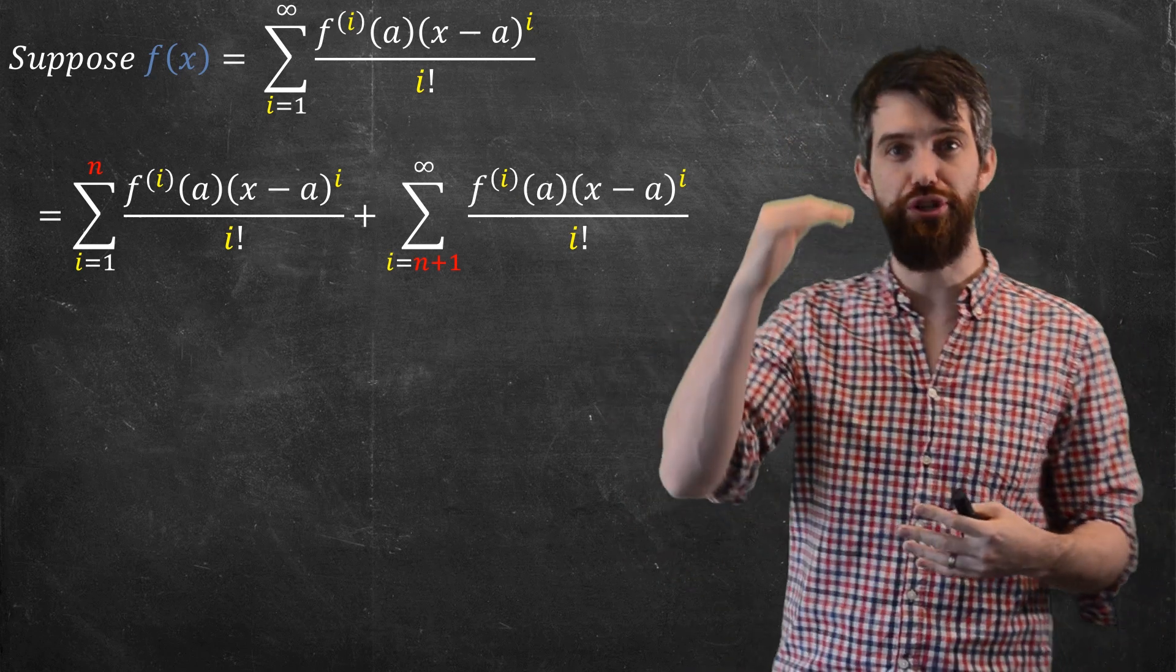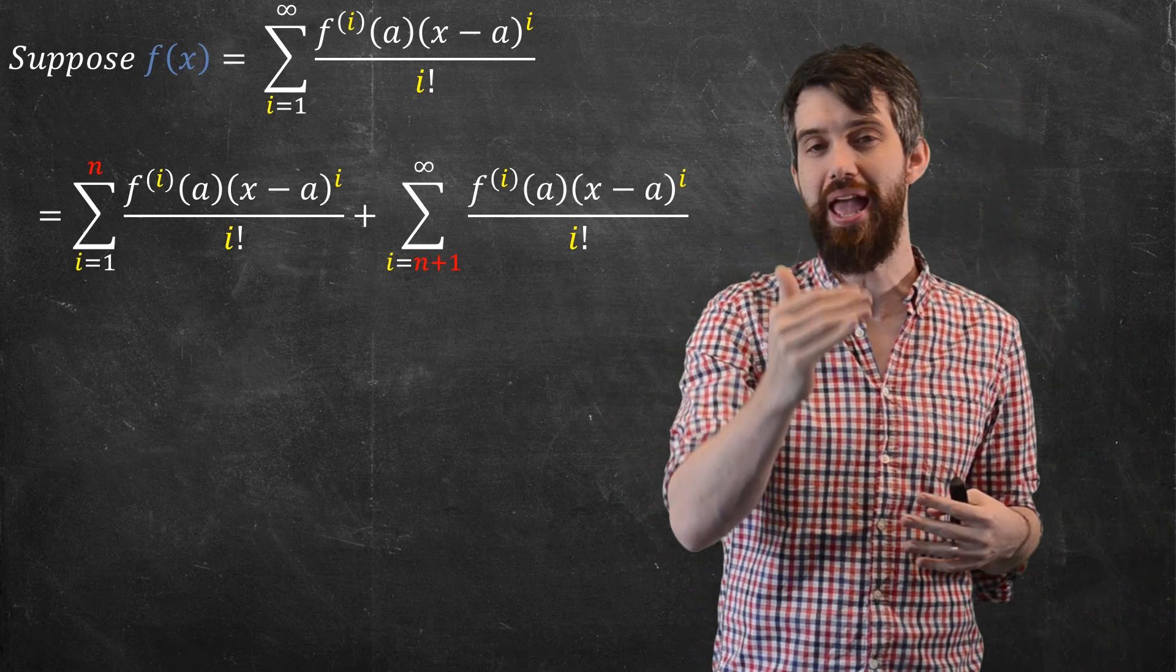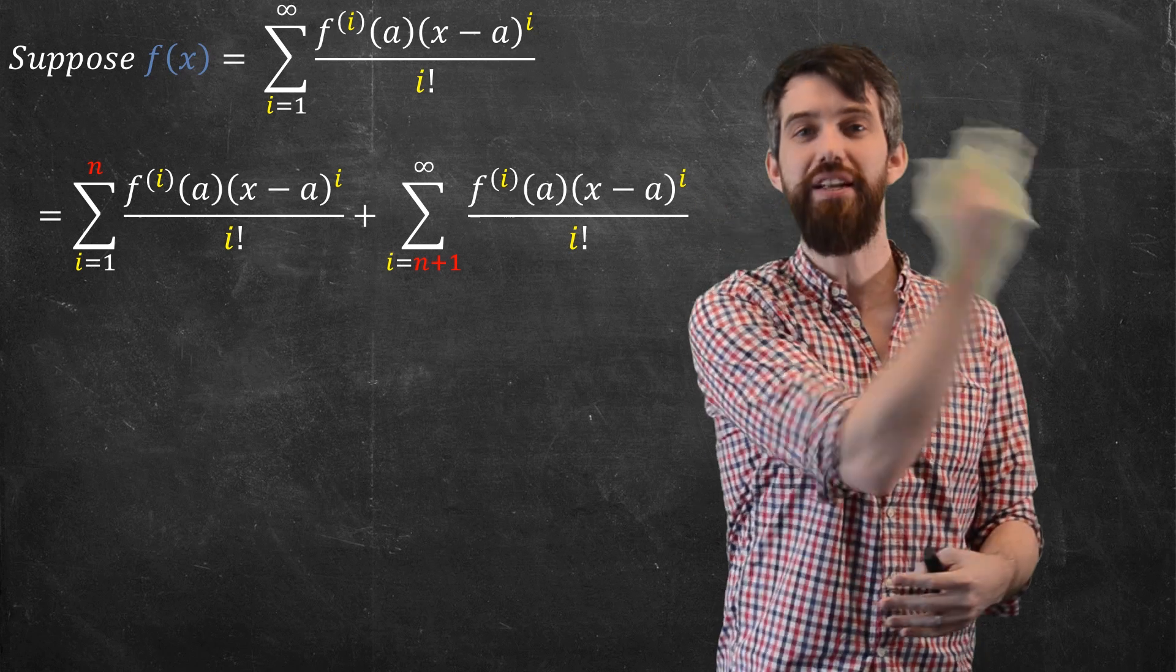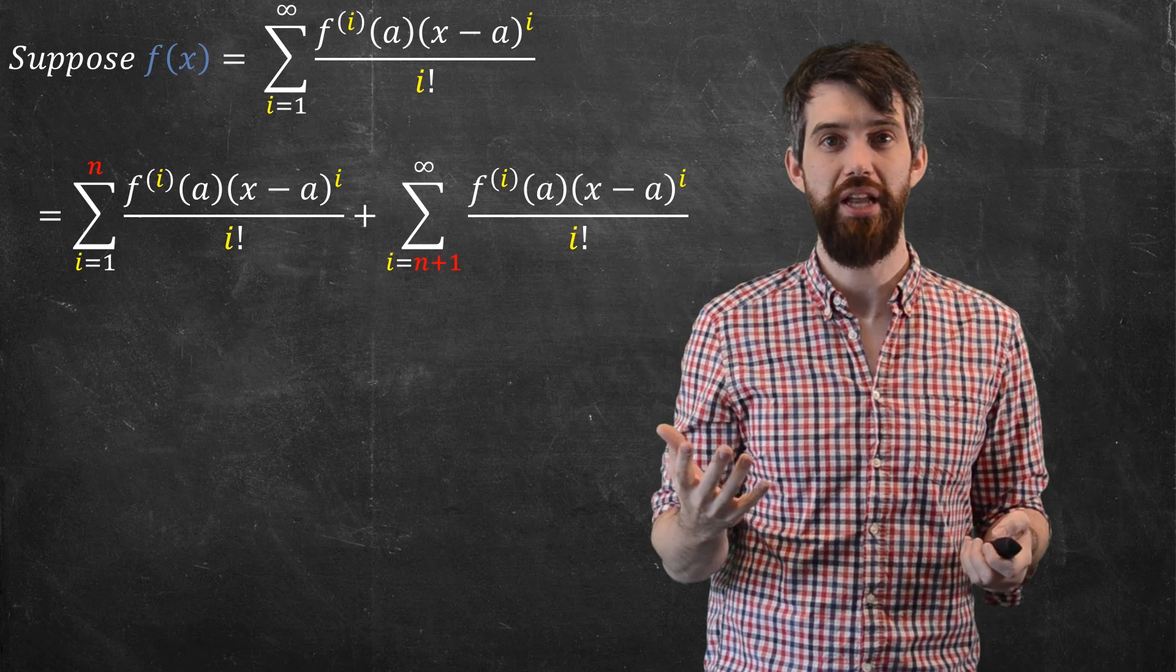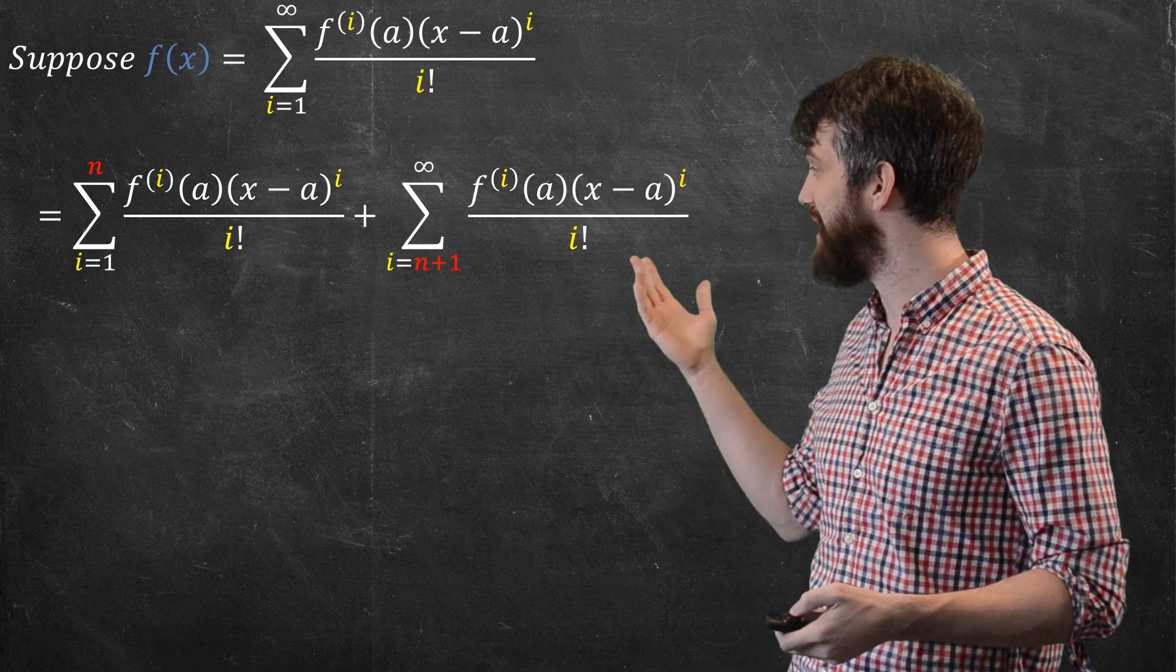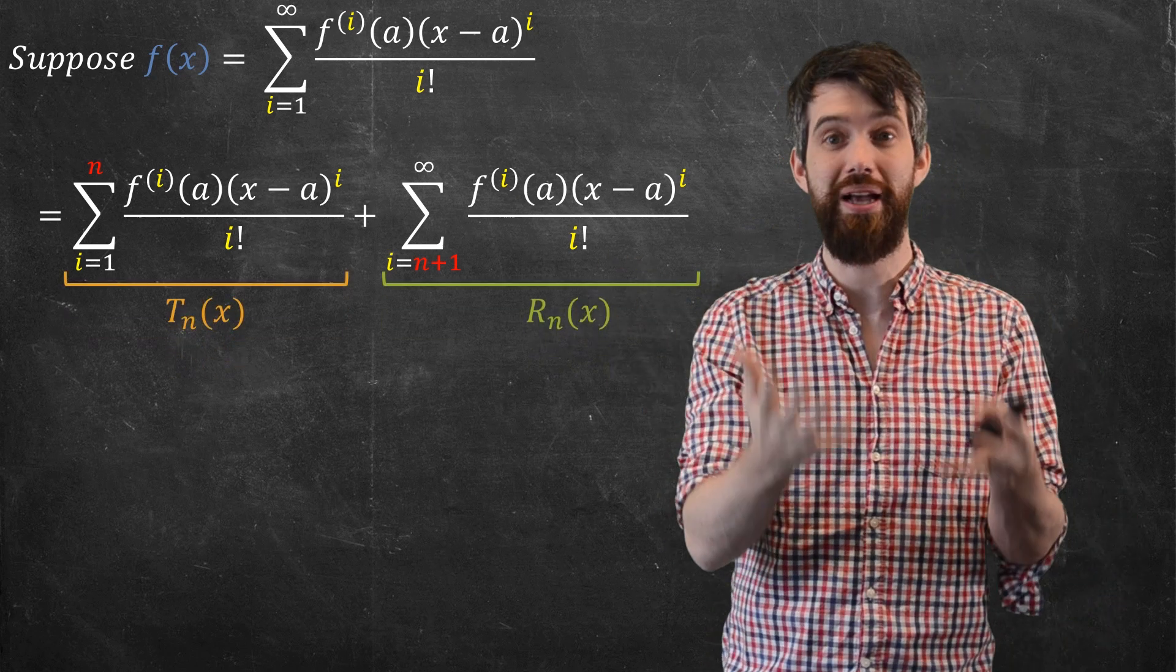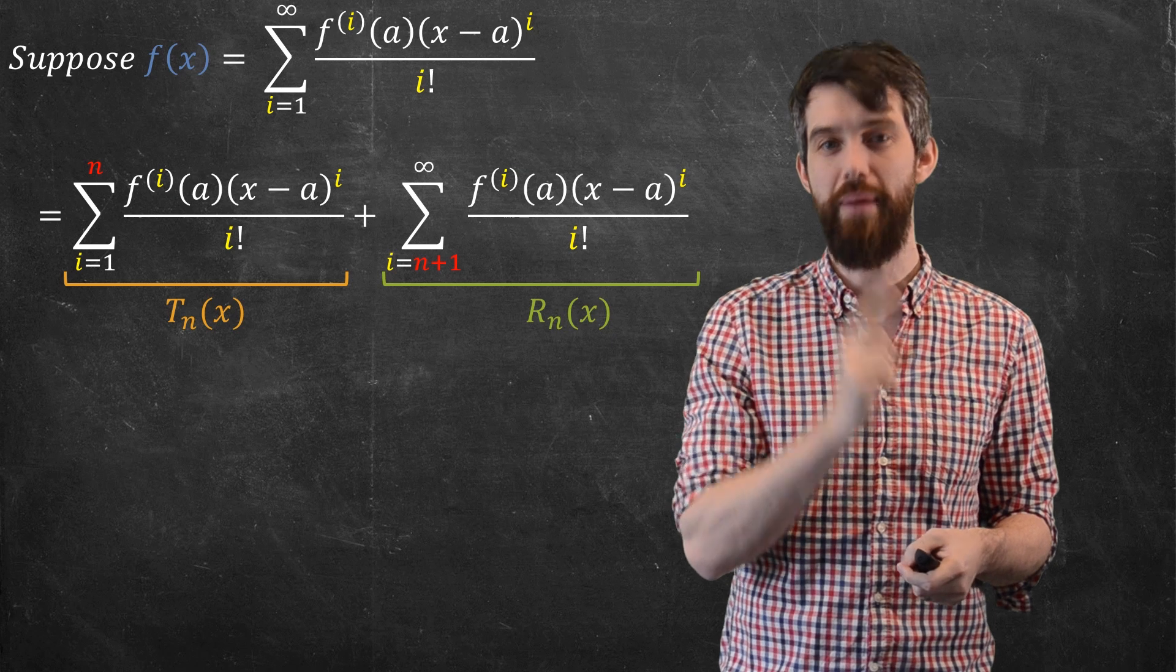So, two different regions, and the first of them I'm going to call my Taylor polynomial now, polynomial because it's finite, and the second is my Taylor's remainder.